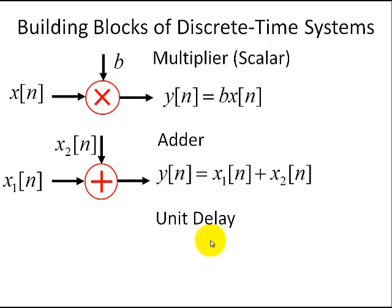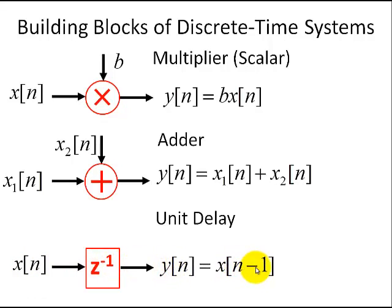And finally, we have a unit delay. We'll symbolize this unit delay as z to the minus 1, and when we talk about Z transforms, you'll see later that this is a unit delay. But for now, just think of it as you have an input signal, and because of the delay, it's delayed by one unit. So our output from this unit delay is a delayed input of one sample. So these are the three building blocks to build basically any type of discrete time filter or system.